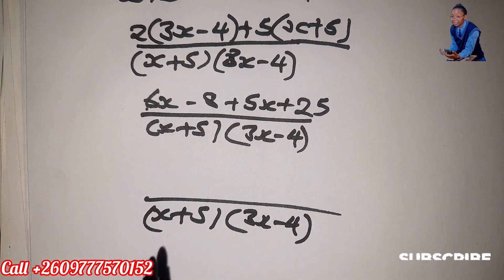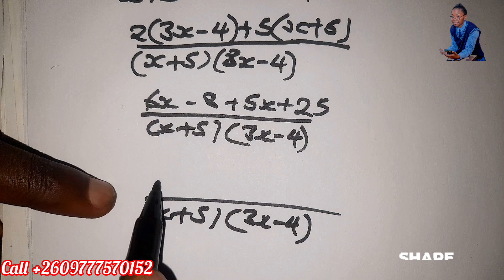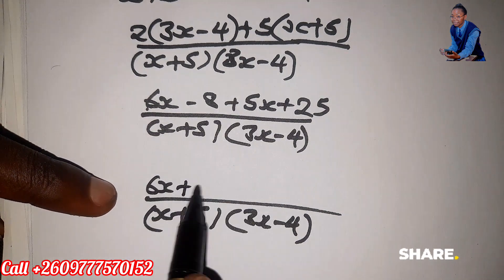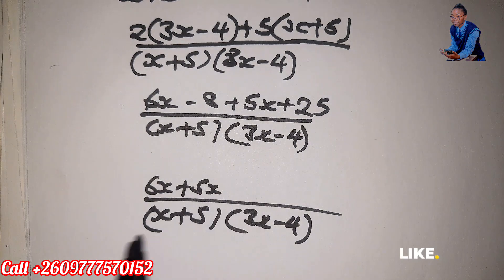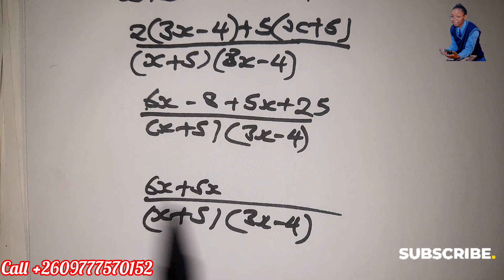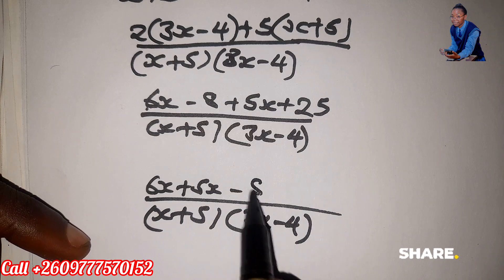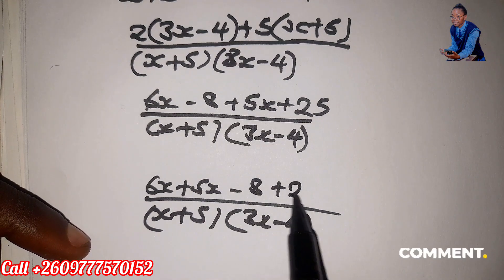Then here we can collect the like terms. So we have 6x and this is positive 5x. The positive 5x doesn't change the sign because it's just changing the position, not crossing the equal sign. Minus 8 plus 25.